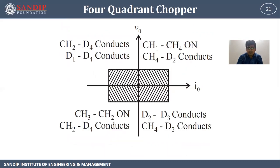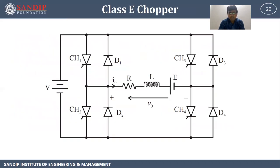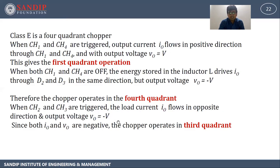Class E chopper gives output voltage positive or negative and output current positive or negative, so it is a four-quadrant chopper. When CH1 and CH4 are triggered, output current flows in the positive direction through CH1 and CH4 with output voltage equal to V — this gives first quadrant operation. When both CH1 and CH4 are off, the energy stored in inductor L drives I0 through D2 and D3 in the same direction, but output voltage V0 is minus V, so the chopper operates in the fourth quadrant. When CH2 and CH3 are triggered, the load current I0 flows in the opposite direction and output voltage is minus V; since both output current and voltage are negative, the chopper operates in the third quadrant.